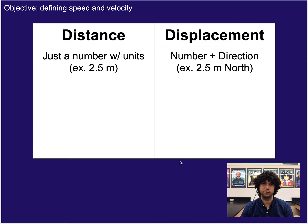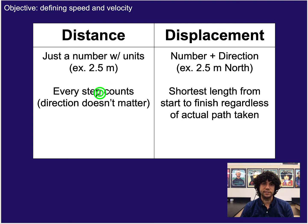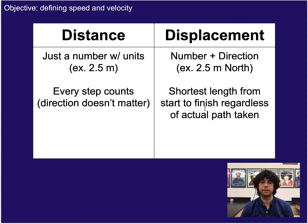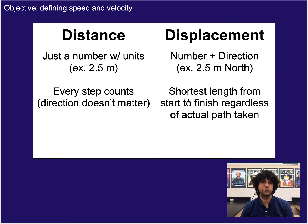Let's compare those two terms. Distance is usually just a number with units. Displacement is going to be a number with a direction as well. In distance, every step counts and direction doesn't matter. In displacement, the shortest length from start to finish — regardless of the actual path taken — is what we focus on. So if you have steps where you go one way and then go back and undo it, we don't actually count those.